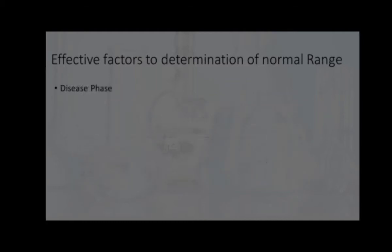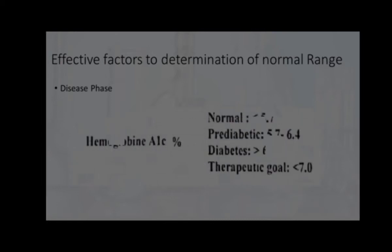Disease phase. The normal range of some internal factors is defined for a phase of disease. For example, hemoglobin A1c for determination of blood glucose level in less than 3 months in diabetes is defined for normal, prediabetic, and diabetic levels.